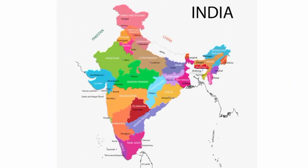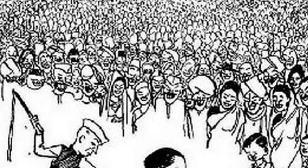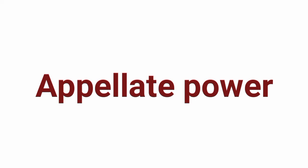There are three types of powers of the Supreme Court: Original Power, Appellate Power, and Advisory Power. The Original Power involves resolving disputes between the Union and States, and between States; safeguarding the fundamental rights of citizens; and interpreting the provisions of the Constitution.